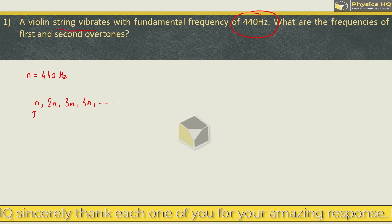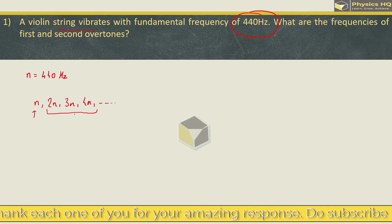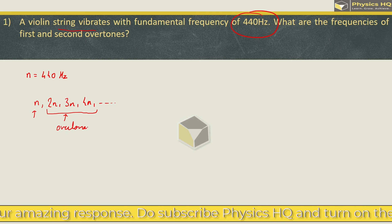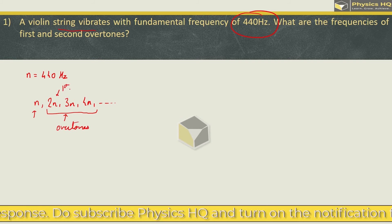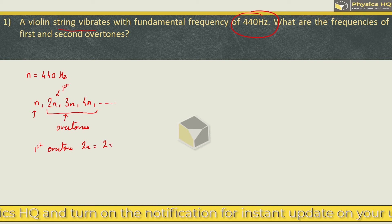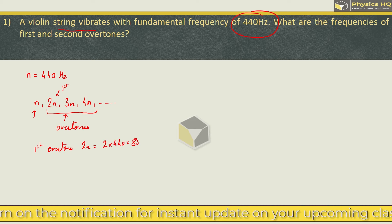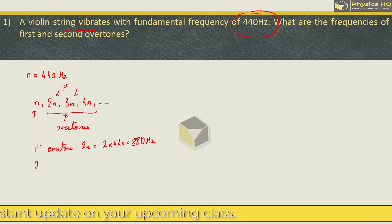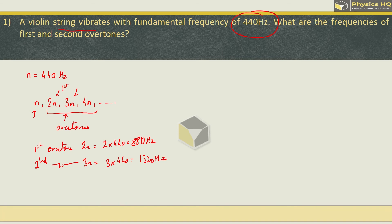When we remove this first harmonic, all the remaining harmonics are nothing but overtones. So the first overtone will be having frequency 2n, which is 2 into 440, which is 880 Hertz. Similarly, second overtone will be 3n, which is 3 into 440, 1320 Hertz.